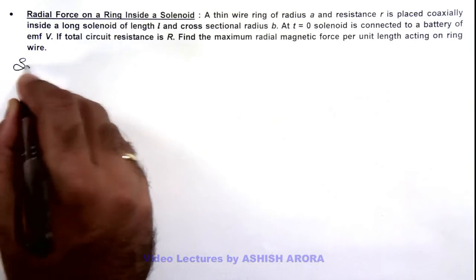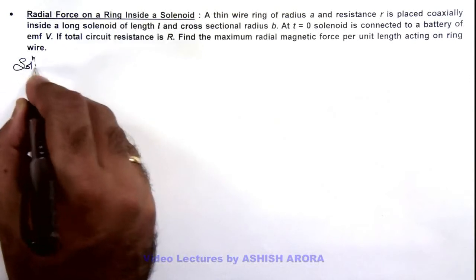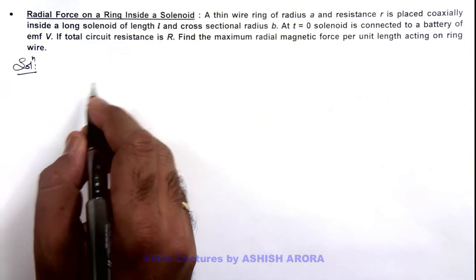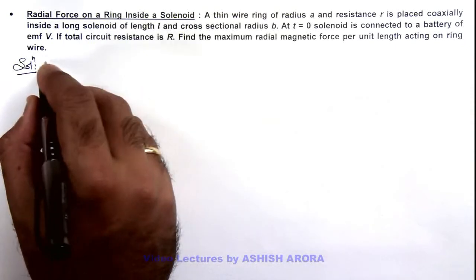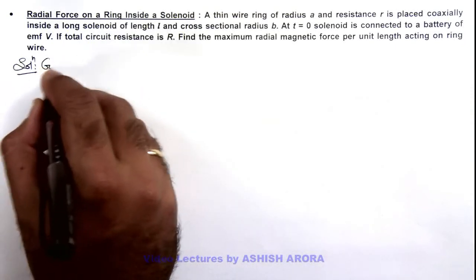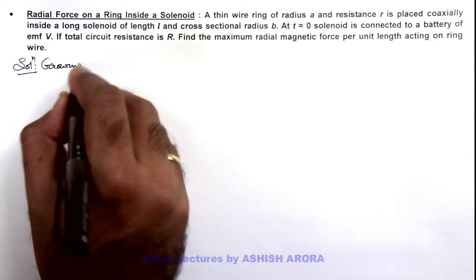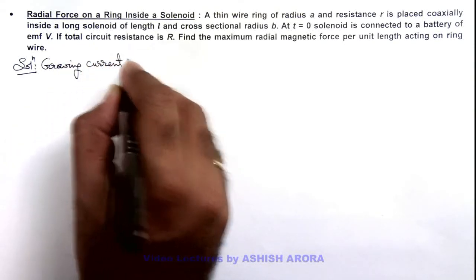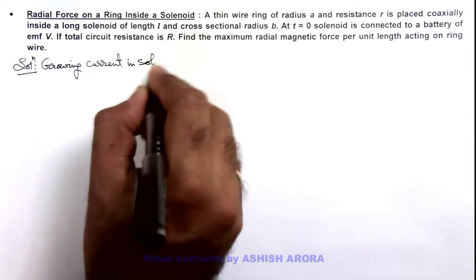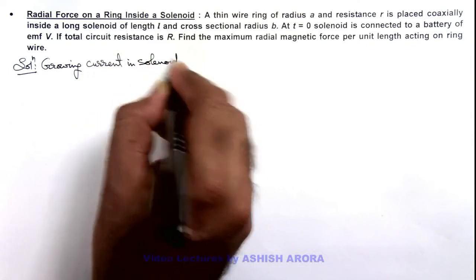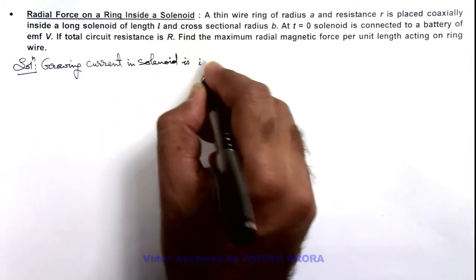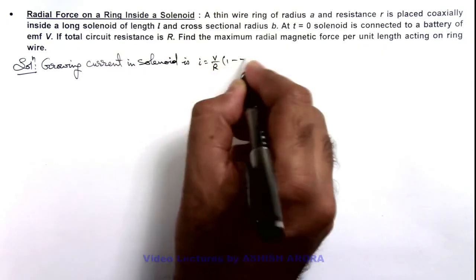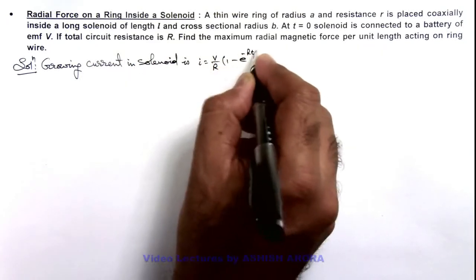Since the solenoid is connected to a circuit of resistance R and EMF V, we can write the growing current in the solenoid as V/R multiplied by (1 minus e to the power minus Rt/L).